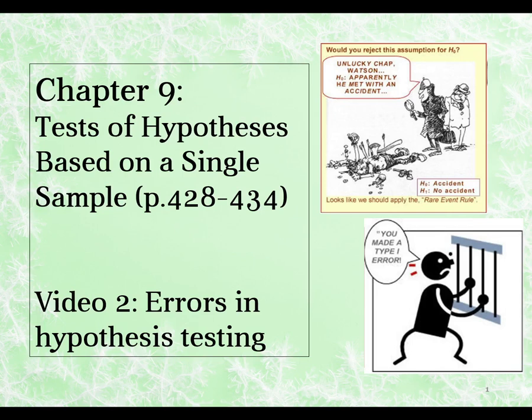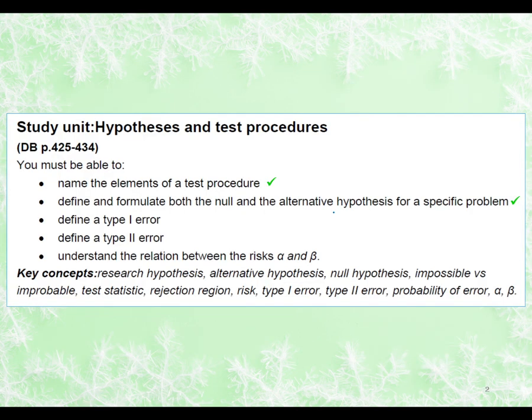In this video, we will look at the errors you can make in hypothesis testing and how we deal with these errors. This is based on chapter 9, section 9.1, specifically pages 428 to 434 of your textbook. In your study guide, we've already dealt with the first two topics, and we will now move on to type 1 and type 2 errors and understanding the relationship between those two types of errors and the risks associated with them.